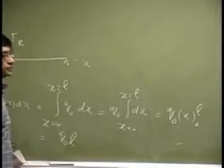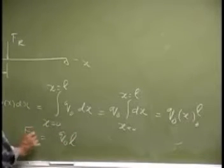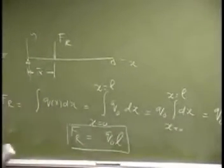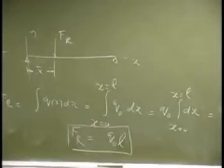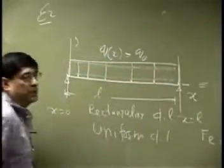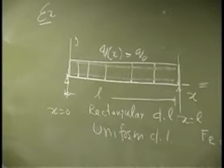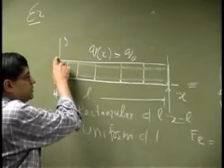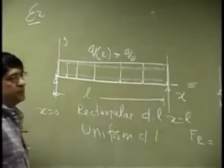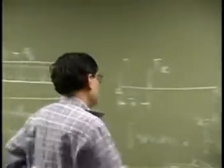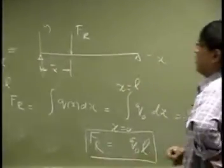That comes out to be the resultant force, and we could have seen that from the beginning because if you look at this area, the area of that rectangle will be the length here which is Q0 and the length on the base that is L. So when going through the integration, all you're really getting is that area of that rectangle.